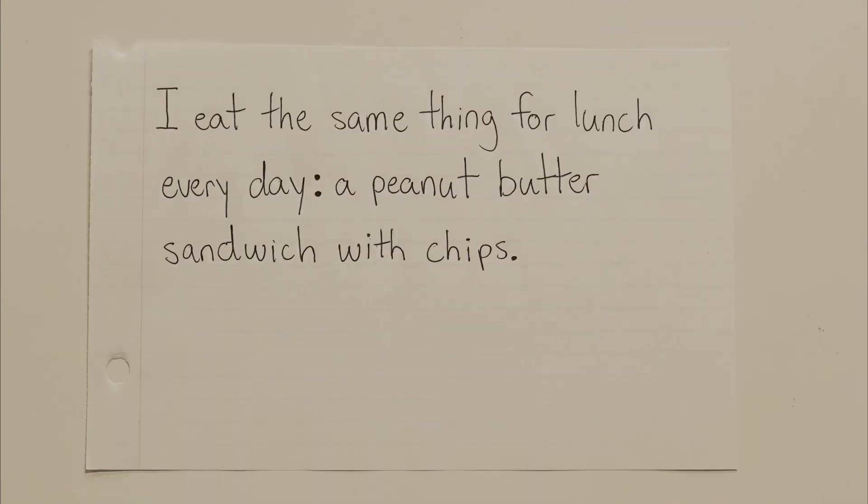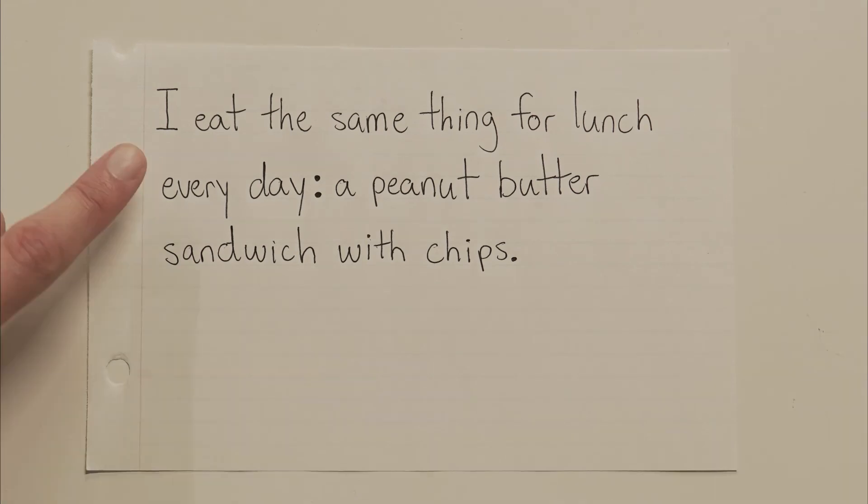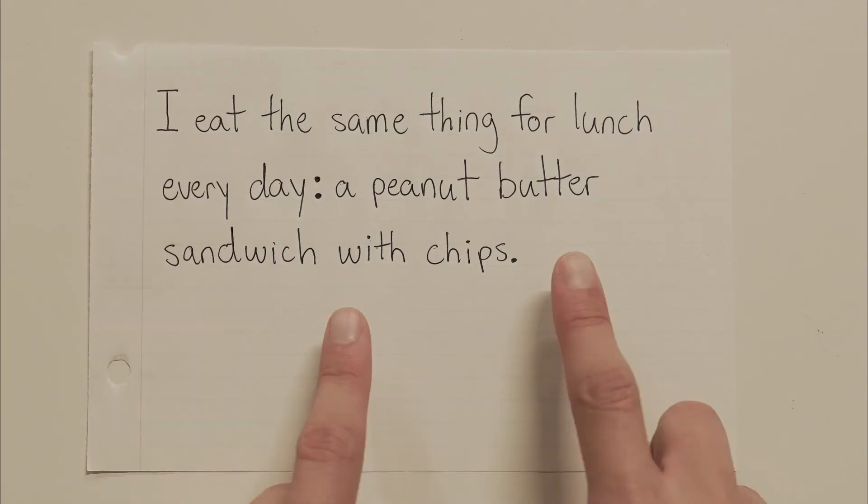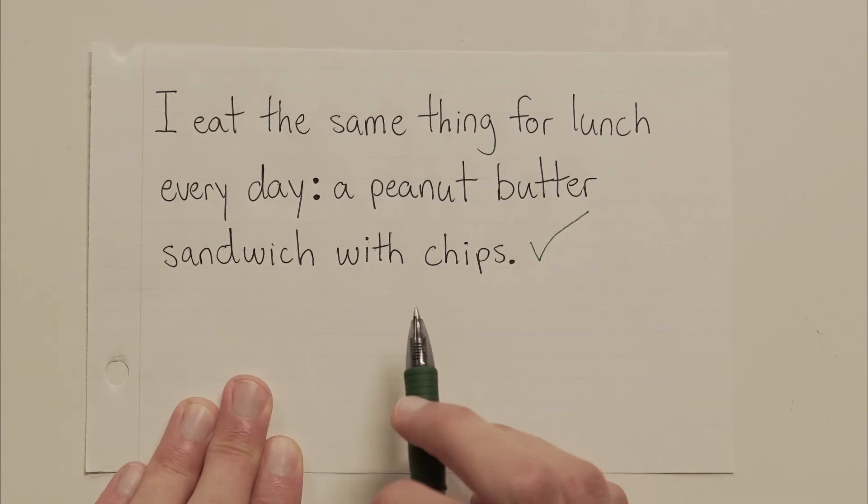Alright. I eat the same thing for lunch every day: A peanut butter sandwich with chips. Alright. What do we got here? Is the part before the colon a complete sentence? Answer is yes. I eat the same thing for lunch every day. That is a complete sentence. And does the stuff after the colon give extra information about that sentence? Also, yes. So, we're good. We've got it. This is how you use a colon.